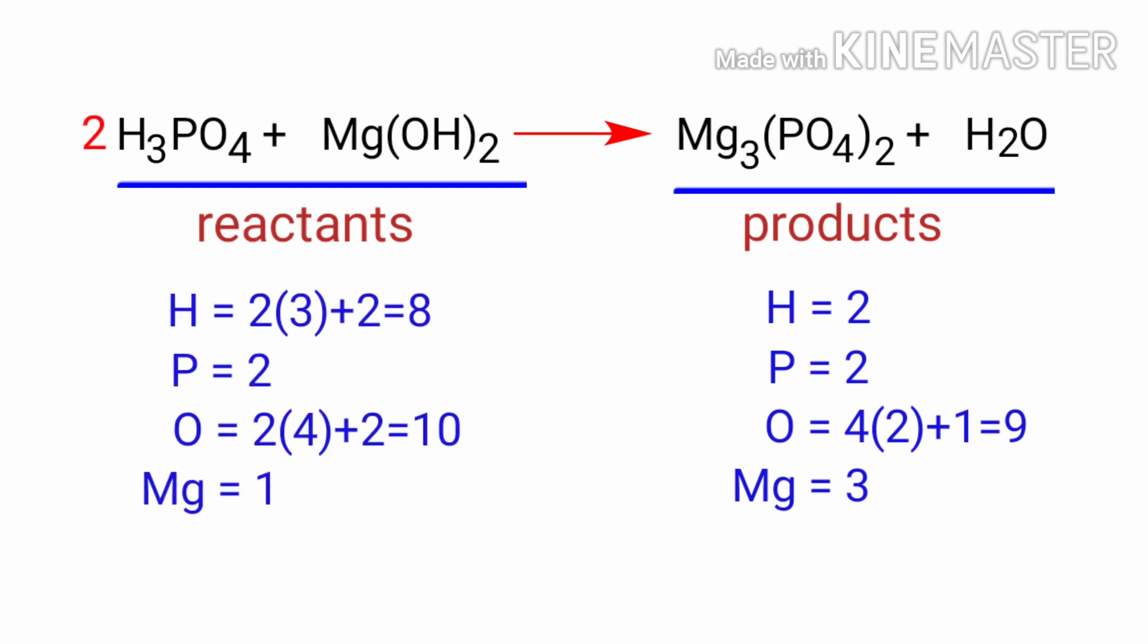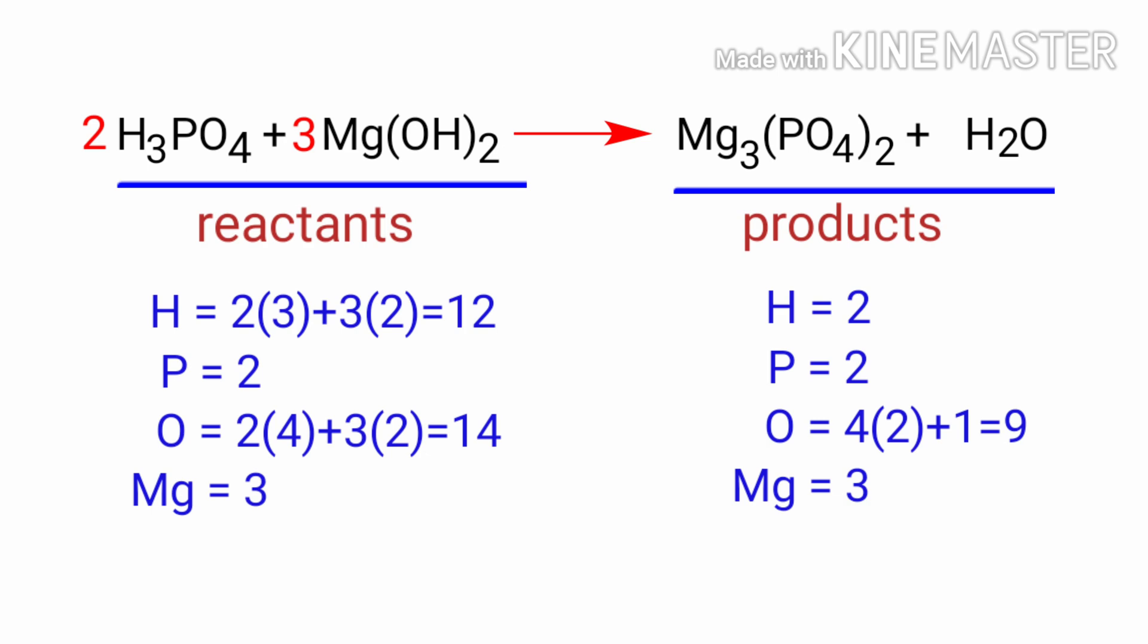The phosphorus atoms are balanced. Now we need to balance the magnesium atoms. To do this we need to put a coefficient of 3 in front of Mg(OH)2. The magnesium atoms are balanced.